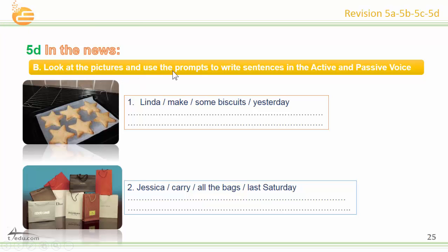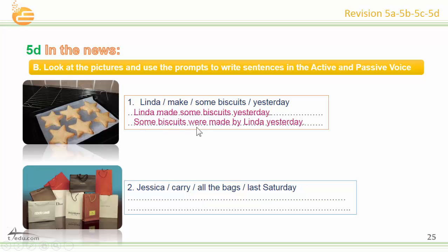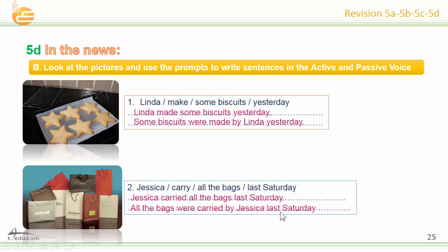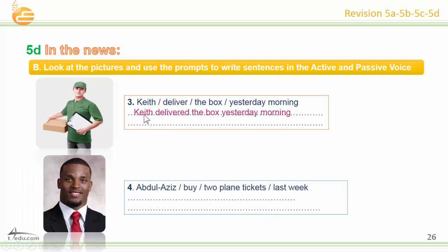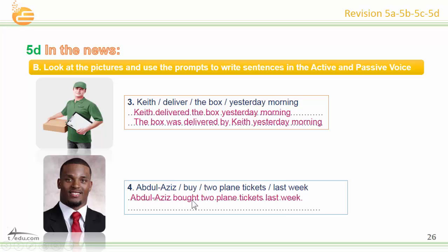Look at the pictures and use the prompts to write sentences in active and passive voice. Number one: Linda made some biscuits yesterday. Some biscuits were made by Linda yesterday. Number two: Jessica carried all the bags last Saturday. All the bags were carried by Jessica last Saturday. Number three: Keith delivered the box yesterday morning. The box was delivered by Keith yesterday morning. Number four: Abdulaziz bought two plane tickets last week. Two plane tickets were bought by Abdulaziz last week.